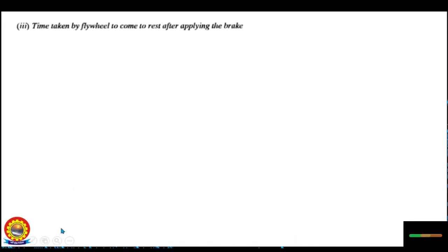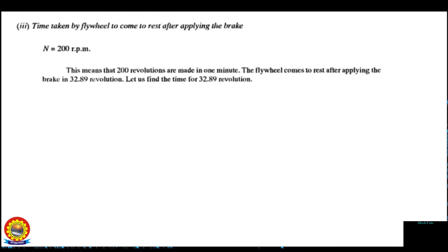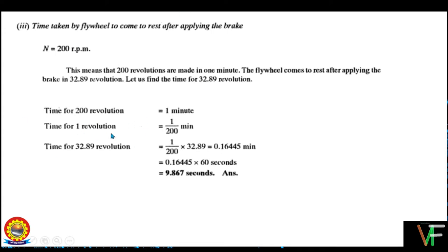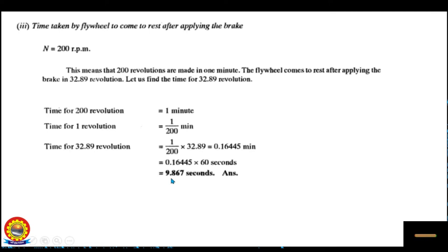Further, let us find the time taken by the flywheel to come to rest after applying the brake. N = 200 rpm means 200 revolutions are made in one minute. The flywheel comes to rest after 32.89 revolutions. Time for 200 revolutions = 1 minute, so time for one revolution = 1/200 minute. Therefore, time for 32.89 revolutions = (1/200) × 32.89 = 0.16445 minutes = 9.867 seconds.